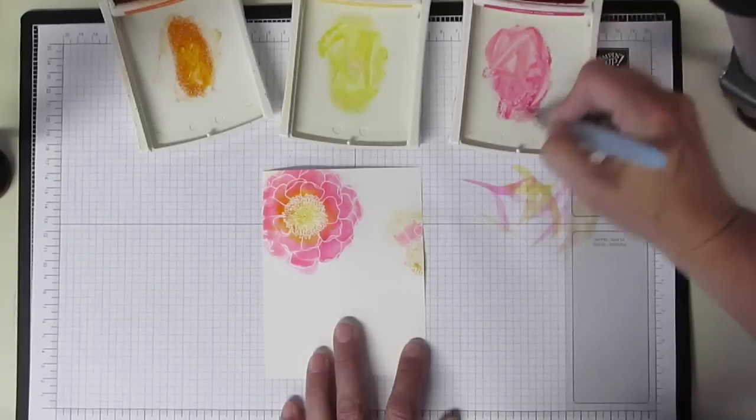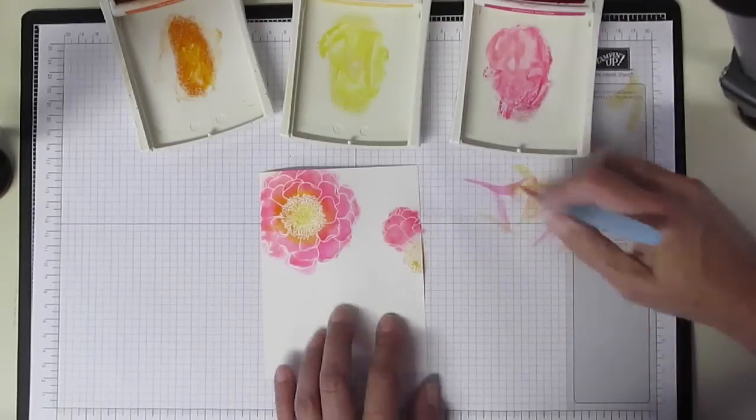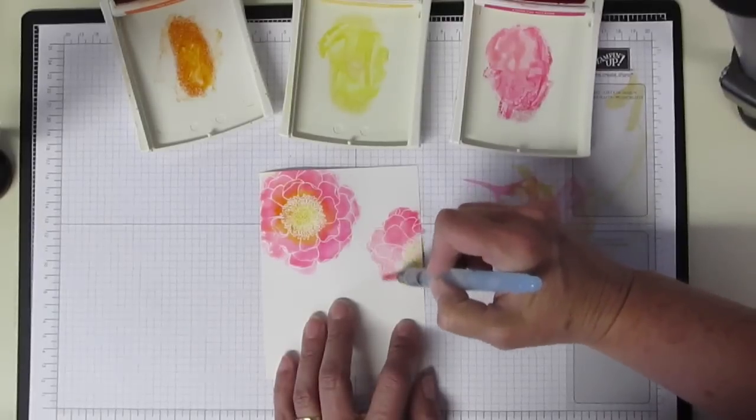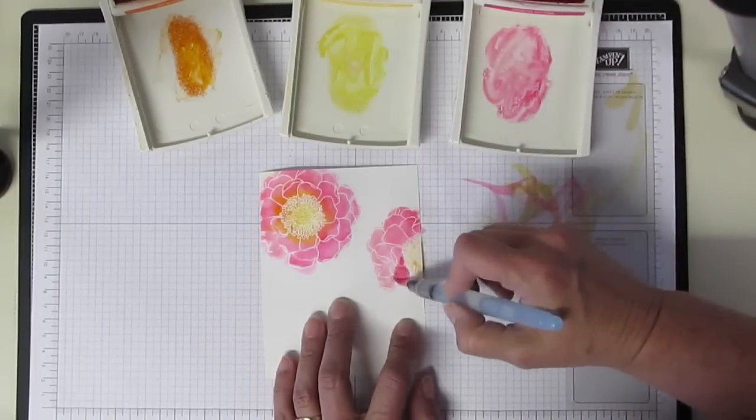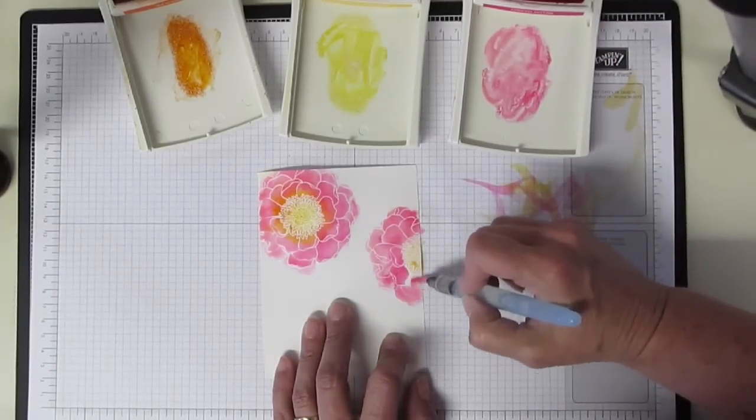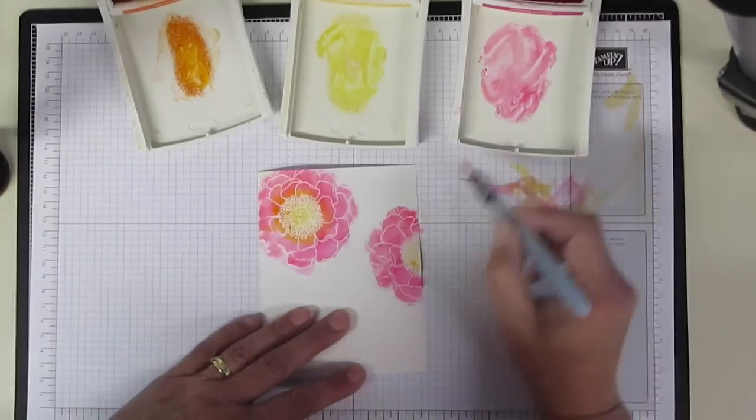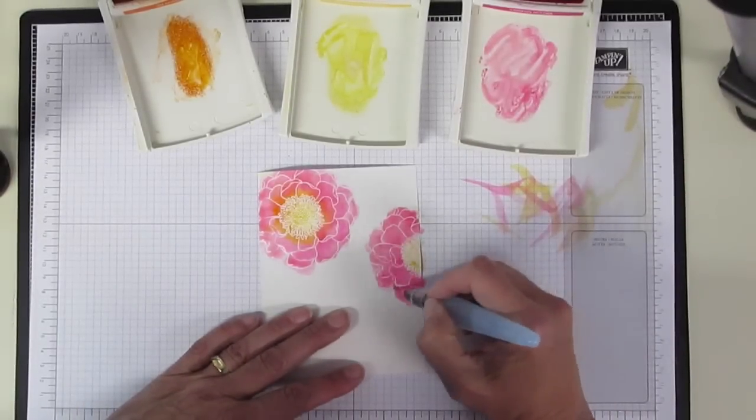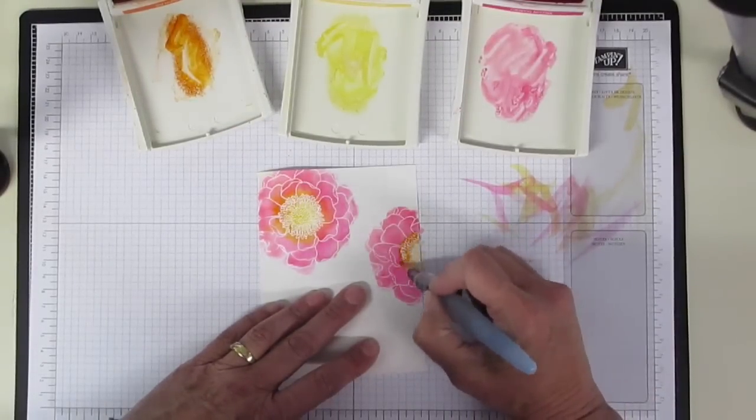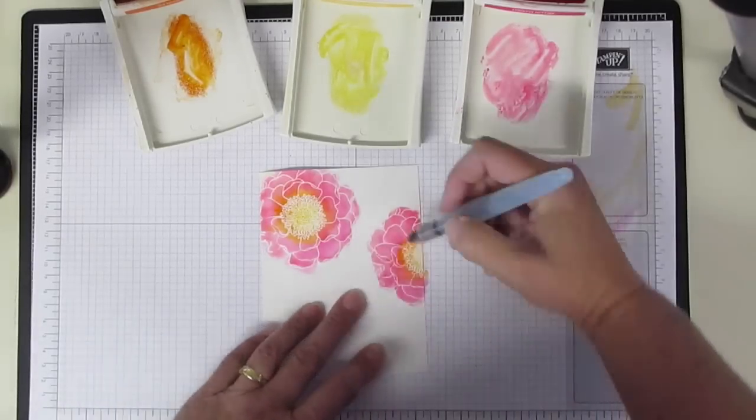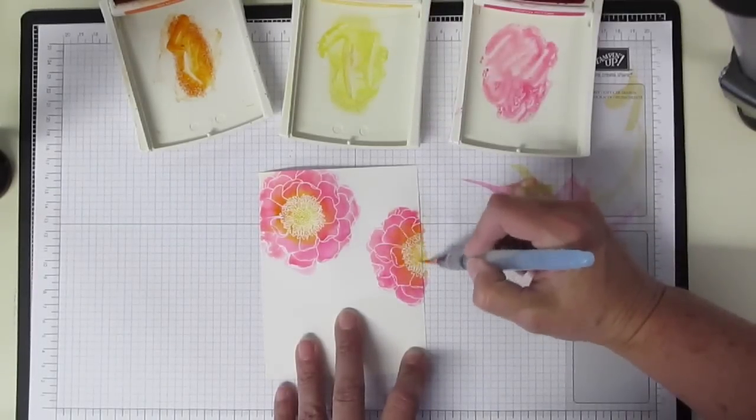Come in with some melon mambo. I'm using daffodil delight, melon mambo, and pumpkin pie. I love that color combination. Get my section wet, bring in some color. Get this section wet. You can see it's just a really fast fun technique and with that white embossing it just pops that image out. Once I've got that done I'm coming back in with some orange along the edge here, and then I'm just going to drag that out. And a little more yellow inside.